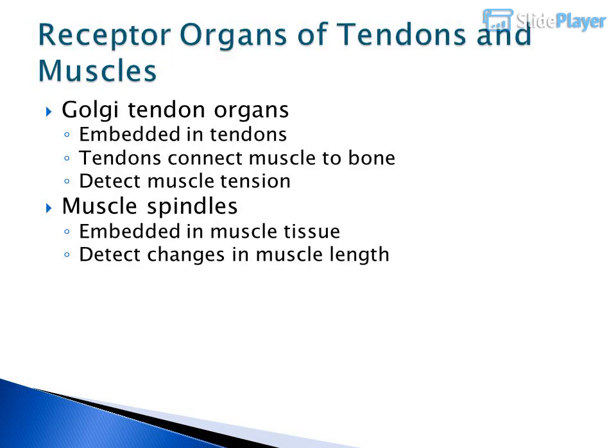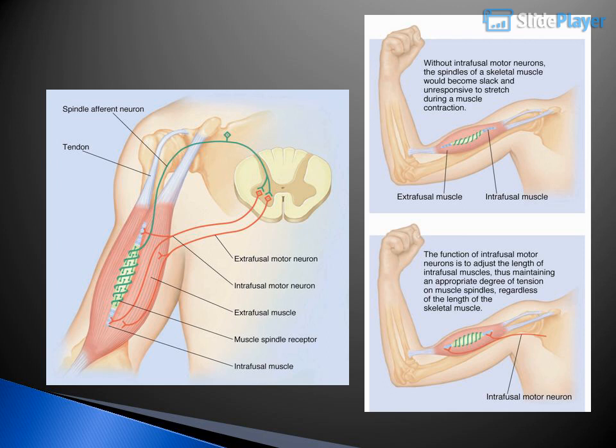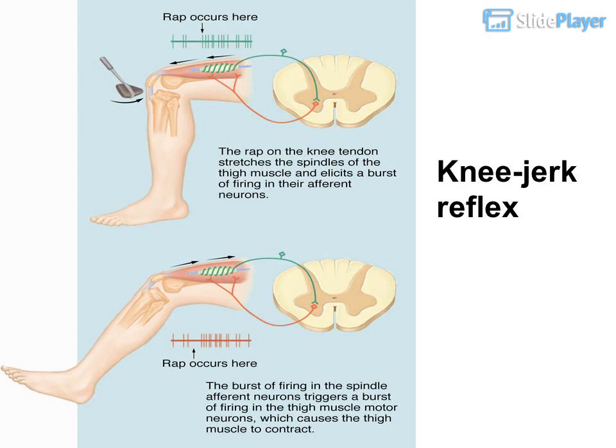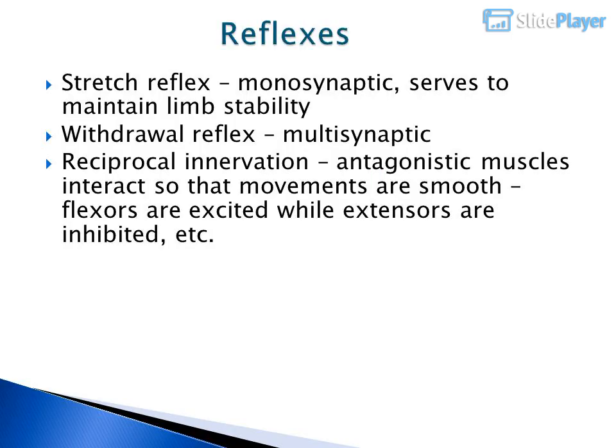Receptor organs of tendons and muscles include Golgi tendon organs, embedded in tendons that connect muscle to bone, which detect muscle tension; and muscle spindles, embedded in muscle tissue, which detect changes in muscle length. Reflexes include the stretch reflex, which is monosynaptic and serves to maintain limb stability, and the withdrawal reflex, which is multisynaptic. Reciprocal innervation means antagonistic muscles interact so that movements are smooth — flexors are excited while extensors are inhibited.